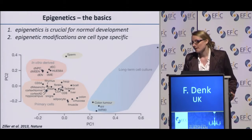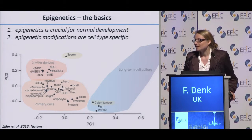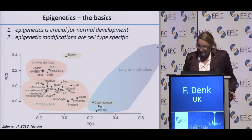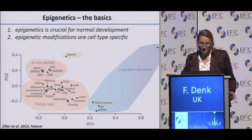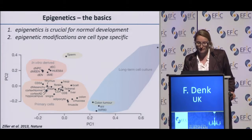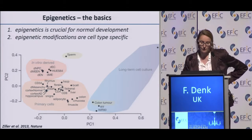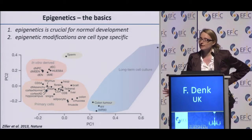Fact number two: epigenetic modifications are highly cell-type specific. This really follows on from the developmental point. Since epigenetics helps determine the fate of a cell, each cell type has its own epigenome. This is illustrated here with global DNA methylation profiles of different cell types — you see primary cell types clustered together, in-vitro-derived cell types clustered together, and even within the clusters you can clearly distinguish between brain cells and heart cells.